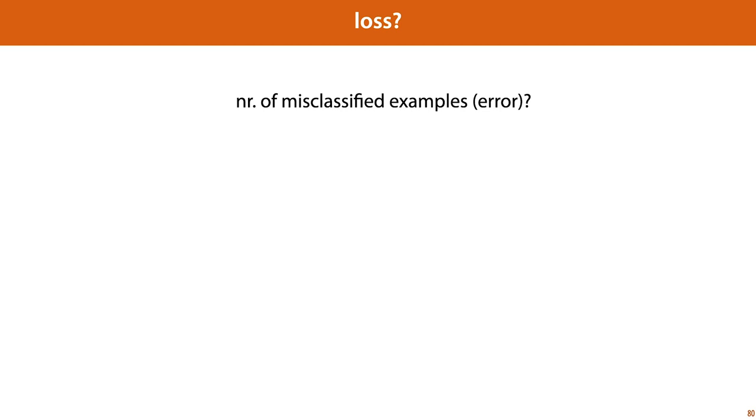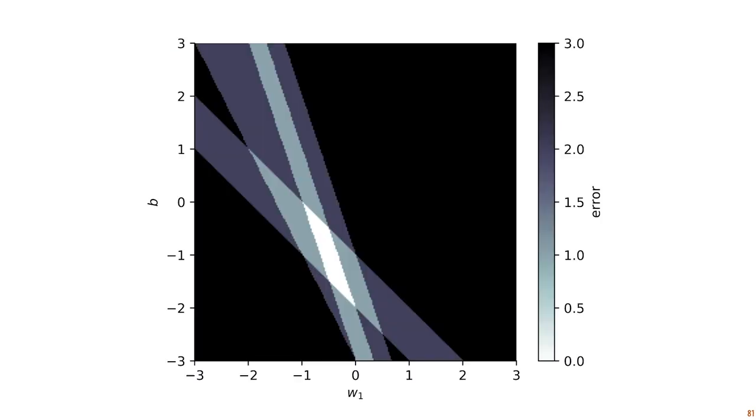What does our loss surface then look like? It looks like this. Note that actually, in this case, our model space has three dimensions, because we now have three parameters. So in order to plot this in two dimensions, we have fixed w2 to 1. But practically, this is the sort of shape our loss surface takes except in three dimensions. The main takeaway here is that this loss surface consists only of large flat regions, where the loss doesn't change.